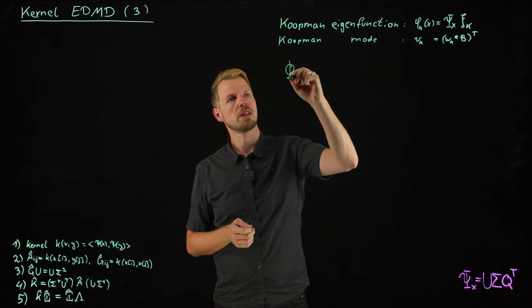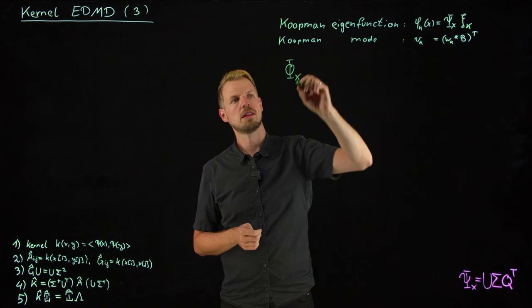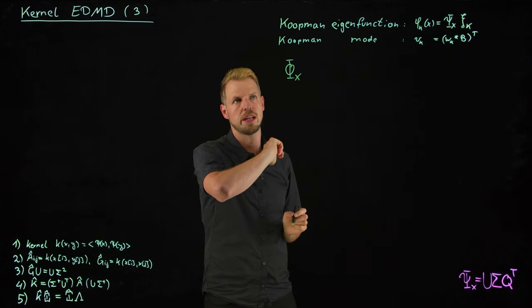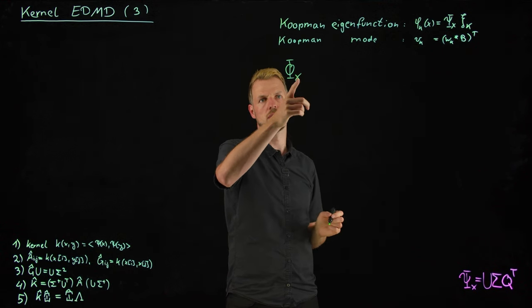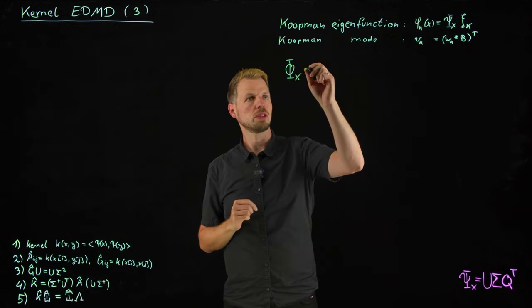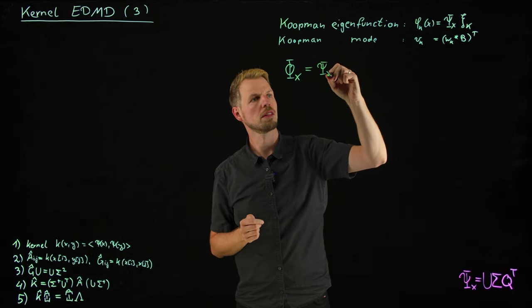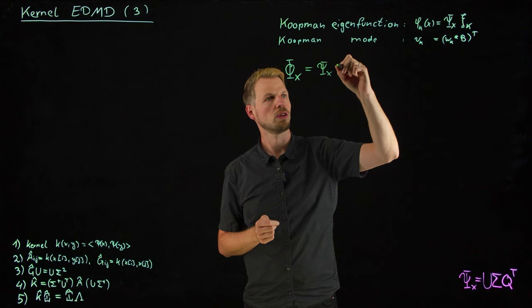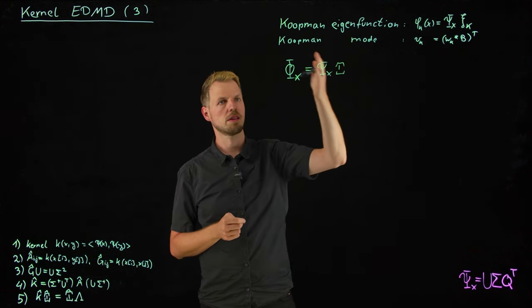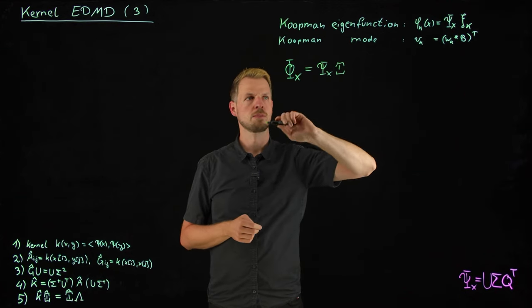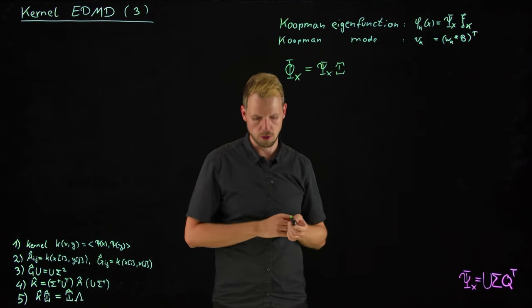We have seen these equations a few times already where we have these eigenfunctions that are defined on a subspace approximately by this feature matrix and then multiplied by the eigenvectors of the K-matrix. And similarly, the Koopman modes were given by multiplication of the left eigenvectors with this projection matrix from the dictionary back to our observable G. That could be the full state observable or any observable function that is a linear combination of our dictionary of functions.